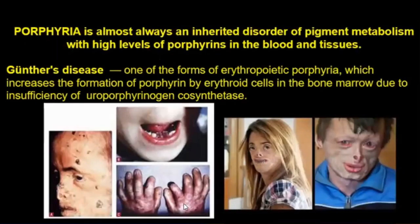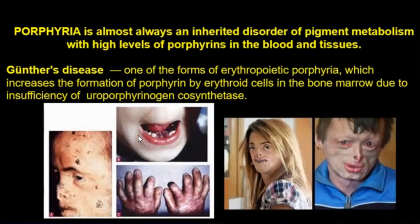Porphyria is almost always an inherited disorder of pigment metabolism with high levels of porphyrins in the blood and tissue. Günther's disease is one of the forms of erythropoietic porphyria, in which the formation of porphyrins by erythroid cells in the bone marrow is increased due to erythropoietin deficiency.